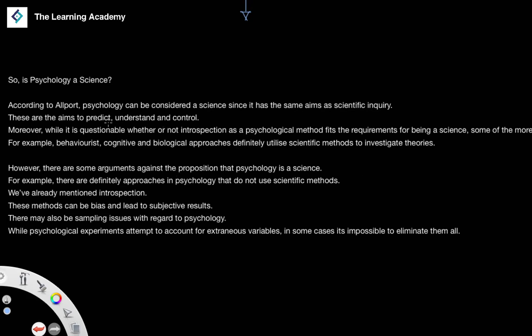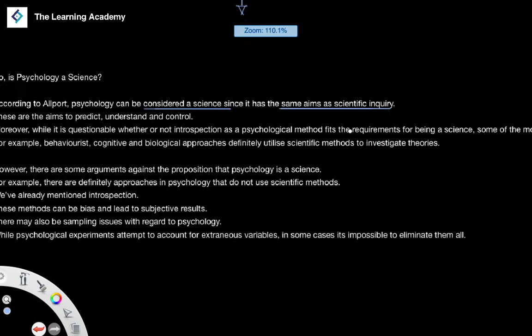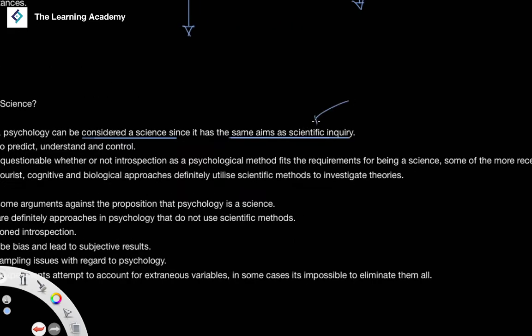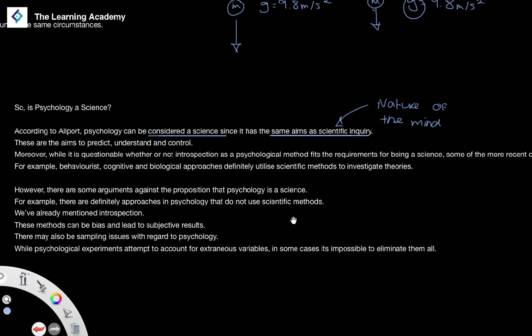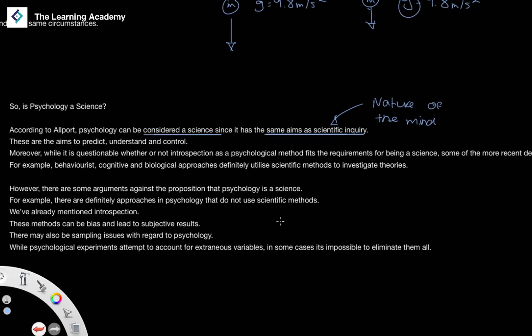According to Allport, psychology can be considered a science since it has the similar aims. It has the same aims of scientific inquiry. It's trying to inquire about the nature of the mind, effectively, and mental processes and behaviour, and trying to understand the mind better. These aims are also able to predict, understand, and control.